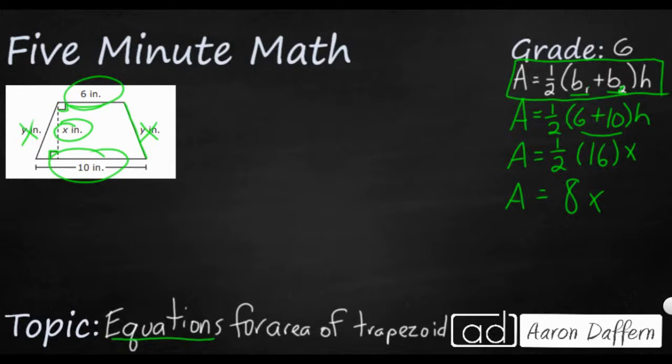Another way to write the area of a trapezoid is going to be like this: A equals b sub 1 plus b sub 2, divide that by 2, and then you multiply that by h. So really, all we did is we take this one half, and we divide the b sub 1 and b sub 2, we divide that sum by 2. Because multiplying by half is the exact same thing as dividing by 2.